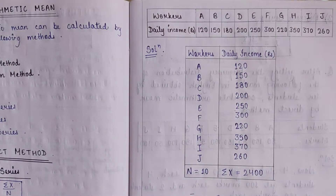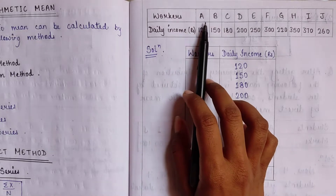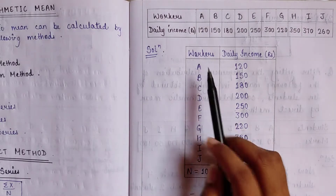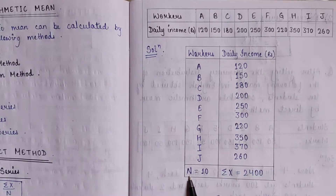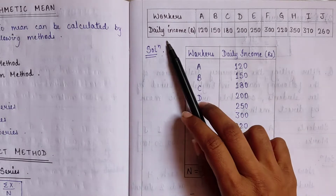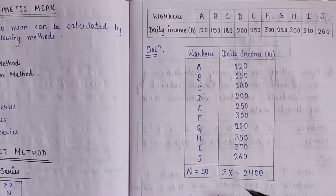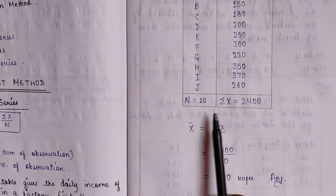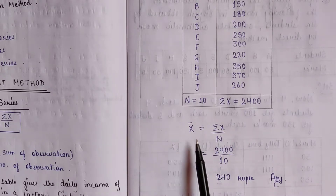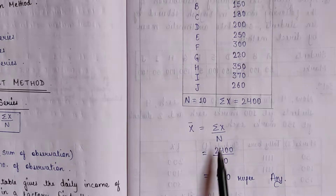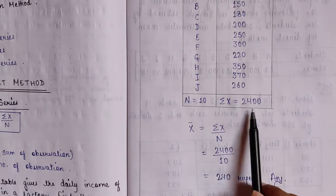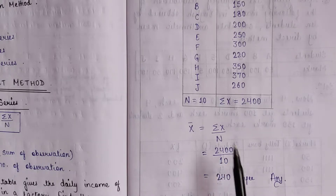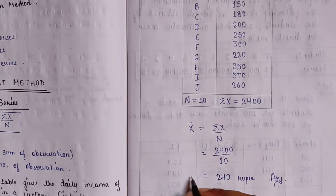For individual series solved by direct method, we count the number of observations: n = 10. We add up all the daily incomes to get Σx = 2400. Now we put these values into the formula: mean = Σx / n = 2400 / 10 = 240 rupees. So the answer is 240 rupees.